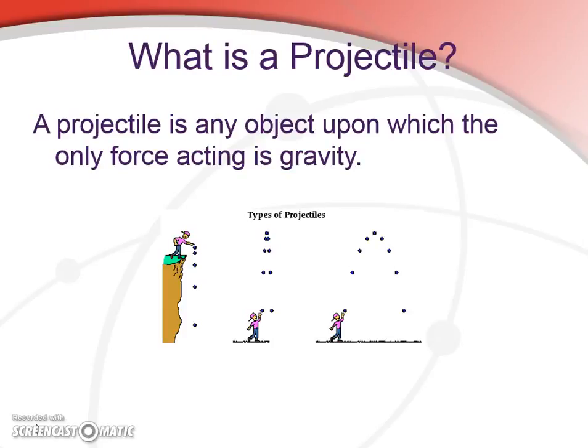But otherwise, essentially anything on earth can be a projectile. I guess another thing worth noting is that anything sitting on a table has gravity acting on it, but the table would be pushing upward with a force equal to gravity, and so it's not a projectile for that reason.